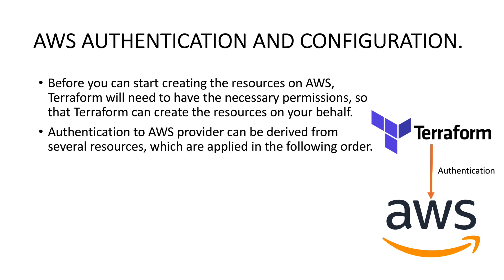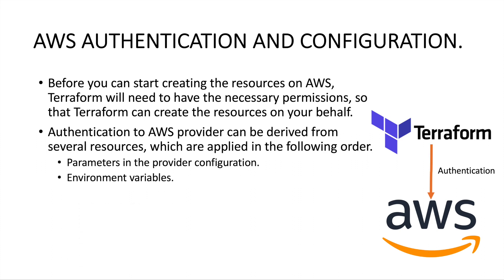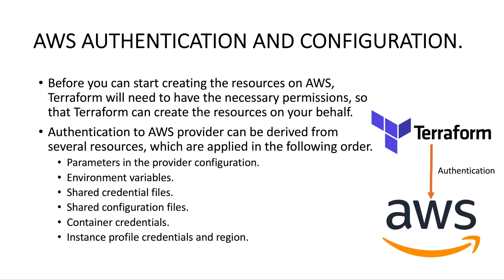The authentication to the AWS provider in Terraform can be provided in several ways, in the following order: you can provide authentication as parameters in the provider block in the Terraform configuration, or as environment variables, or you can make use of a credentials file provided in the provider block, or shared configuration files, container credentials, or instance profiles like an IAM role.